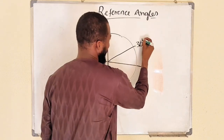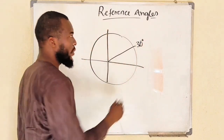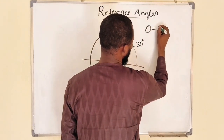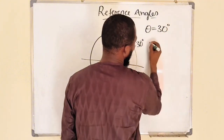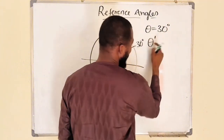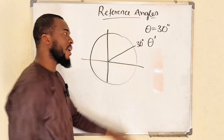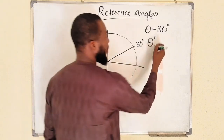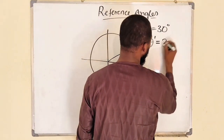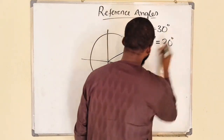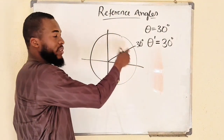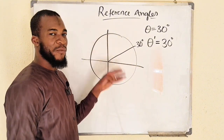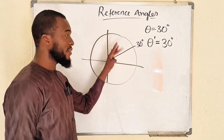If we have an angle in the first quadrant, let's assume theta equals 30 degrees. Then theta prime — this is how we denote the reference angle of that angle — will be the angle itself. We have many special angles in the first quadrant: 30, 45, and 60 degrees, and all of them have reference angles equal to themselves.